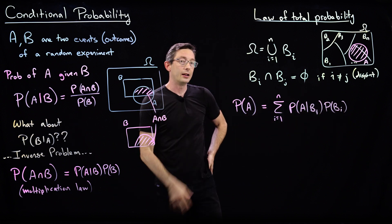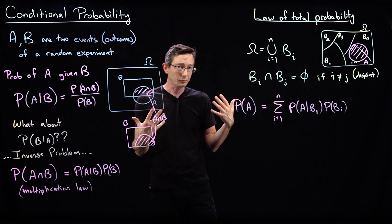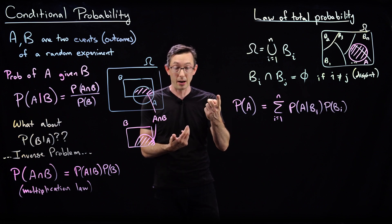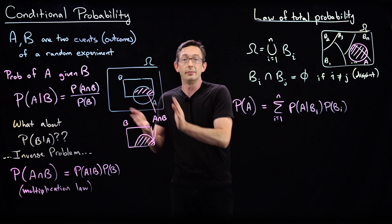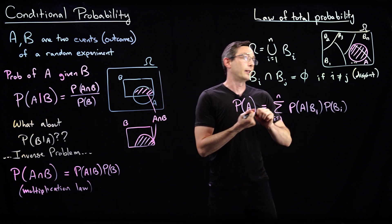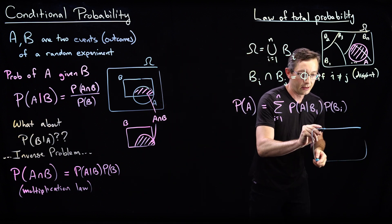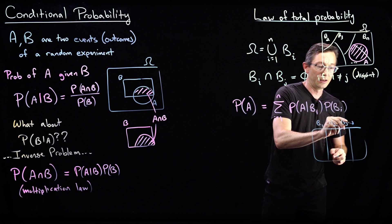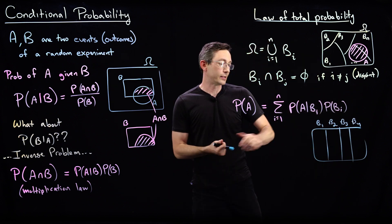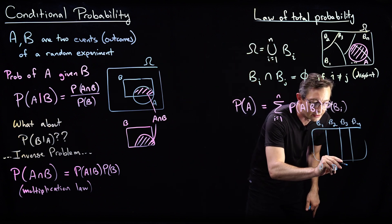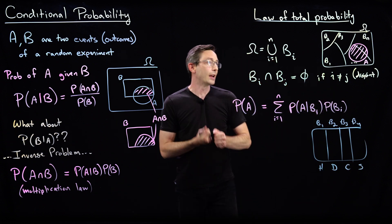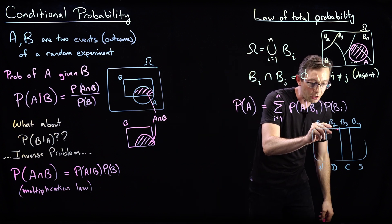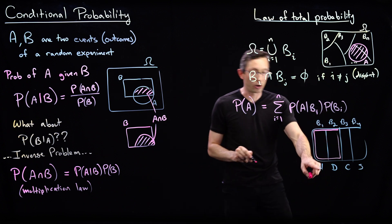For example, what's the probability of my card being a red card? Diamonds and hearts are red cards; clubs and spades are not. So we have B1 = hearts, B2 = diamonds, B3 = clubs, B4 = spades, and event A is that my card is red — so only hearts and diamonds qualify.